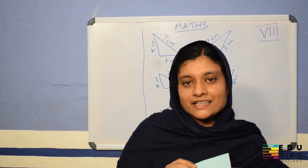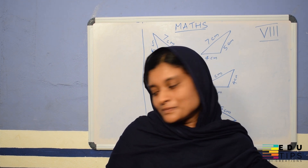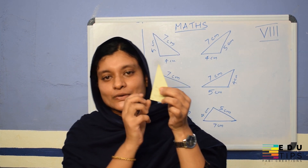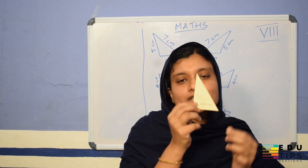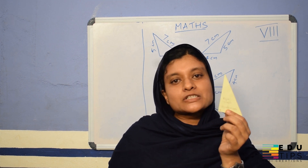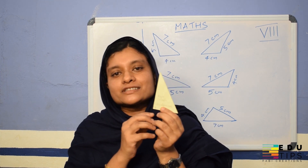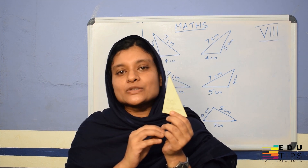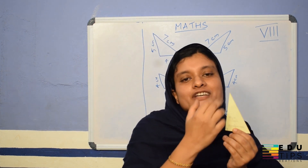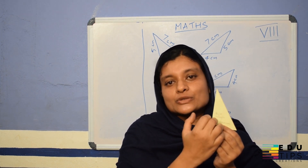Now let's look at triangles classified by their angles. A triangle having one angle of 90 degrees is called a right triangle. Can a triangle have two right angles? The sum of the angles of a triangle is 180 degrees.